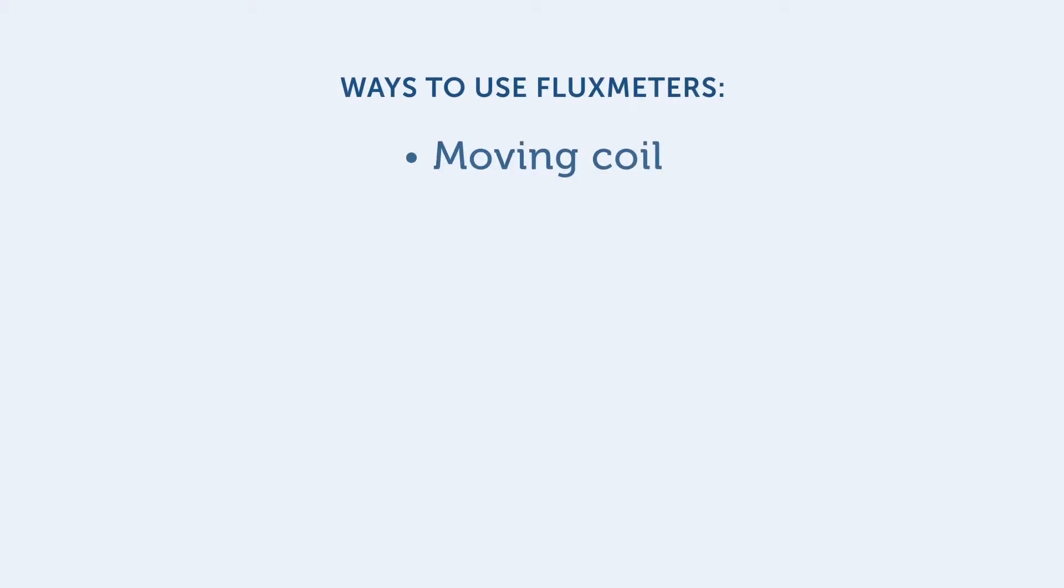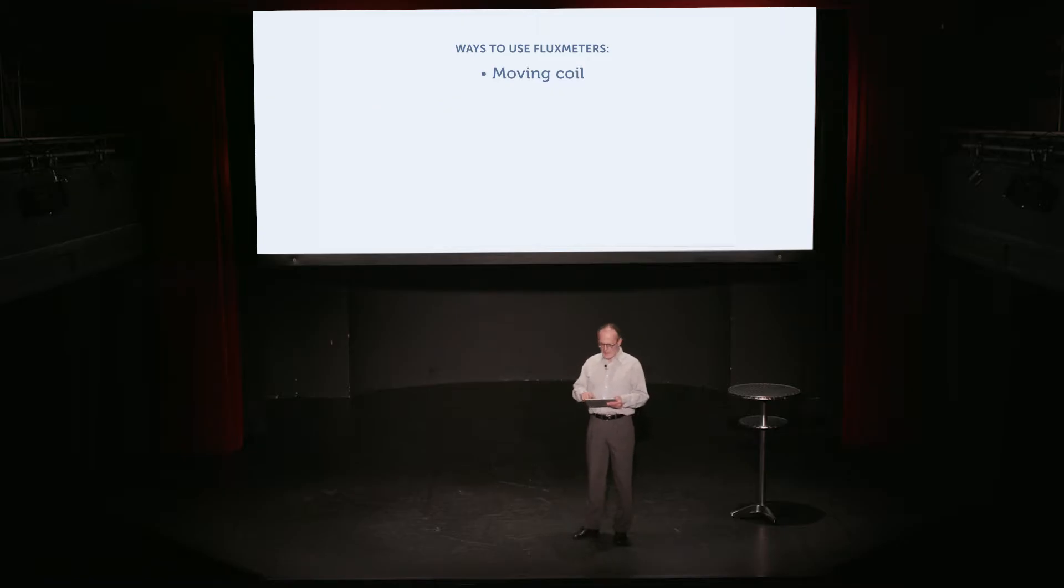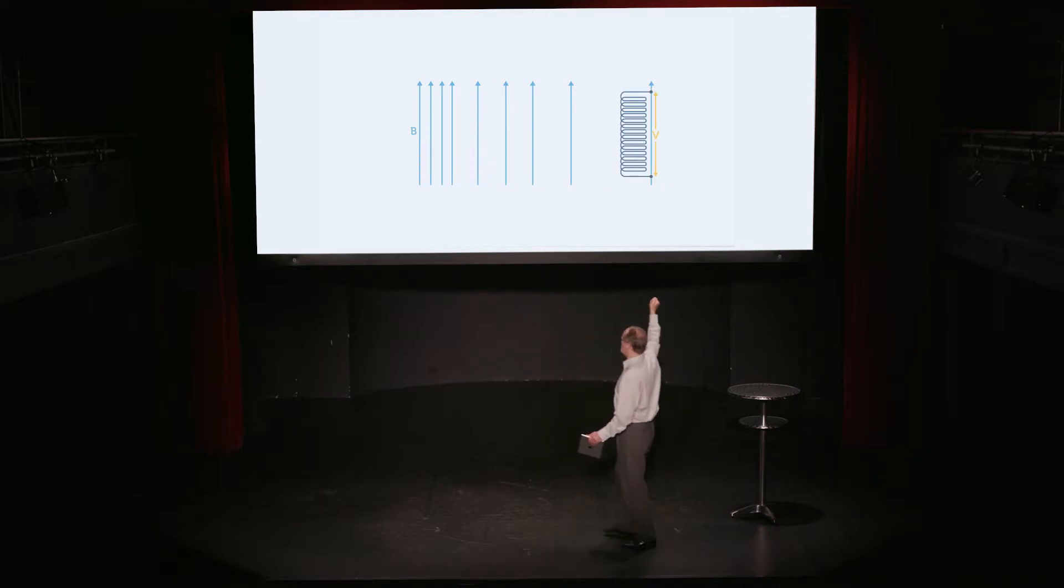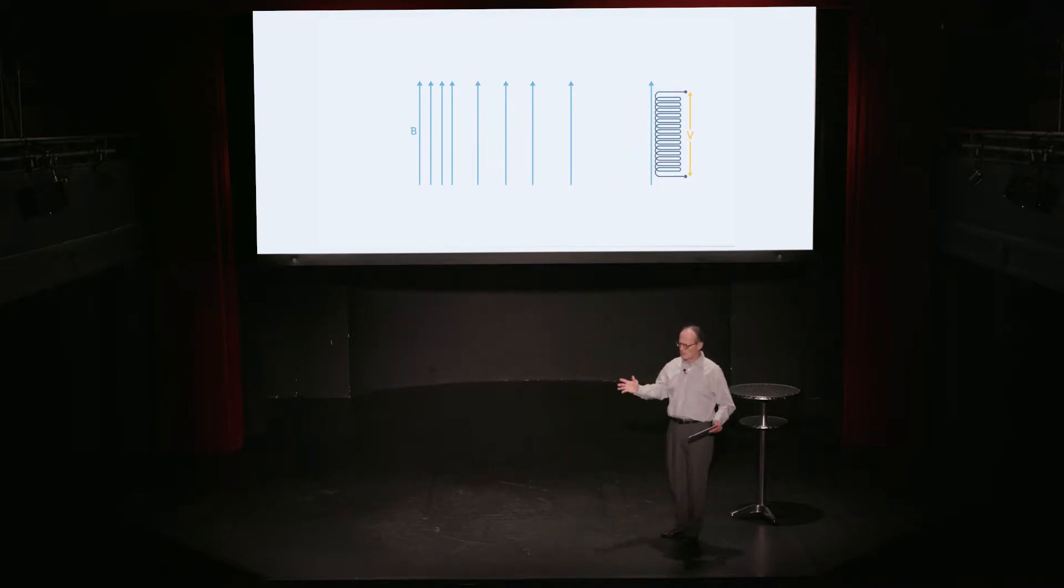Okay, in my introduction, I've talked about one scenario for using flux meters. That's a moving coil. But there's lots others. So the first one is that moving coil. This is used to measure the flux change of one area relative to another area.